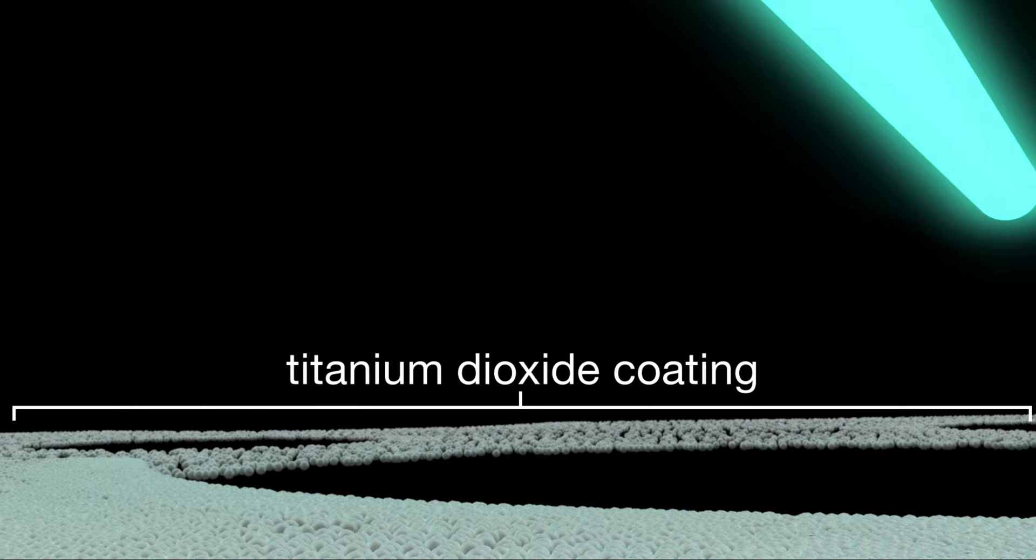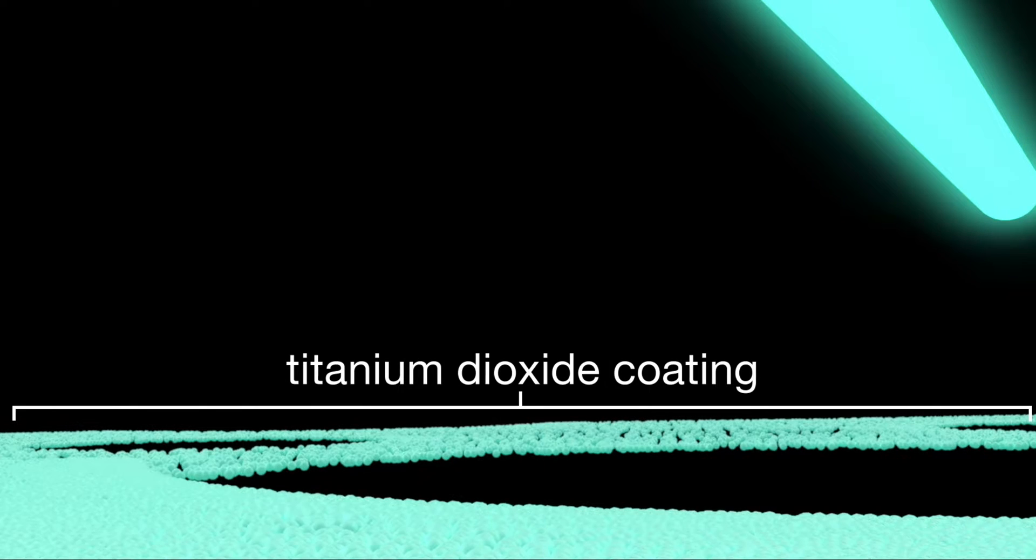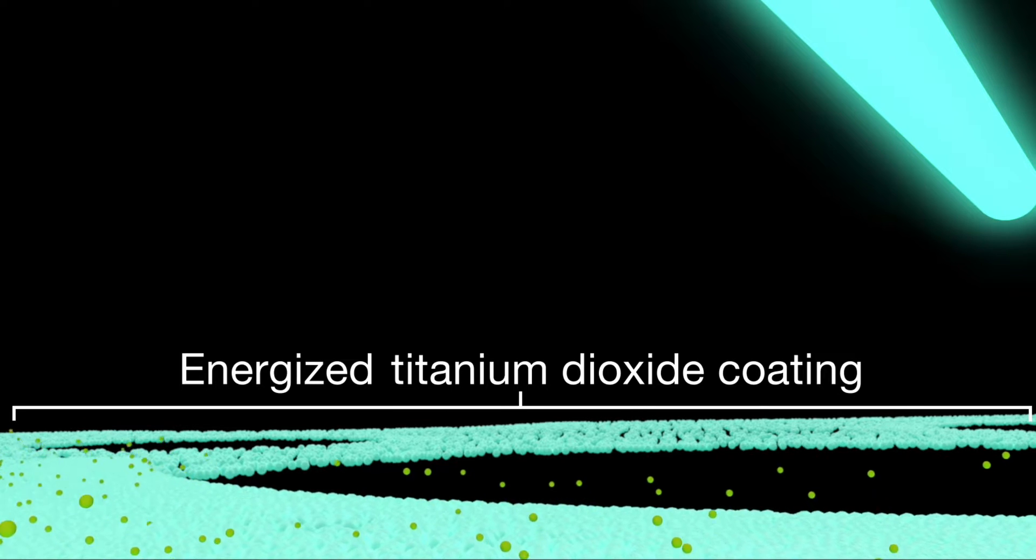When UV light is applied to the surface, the titanium dioxide coating becomes energized, causing it to release electrons.